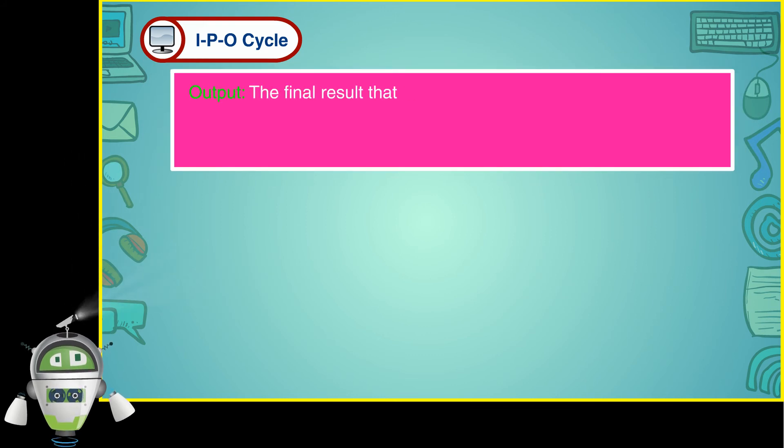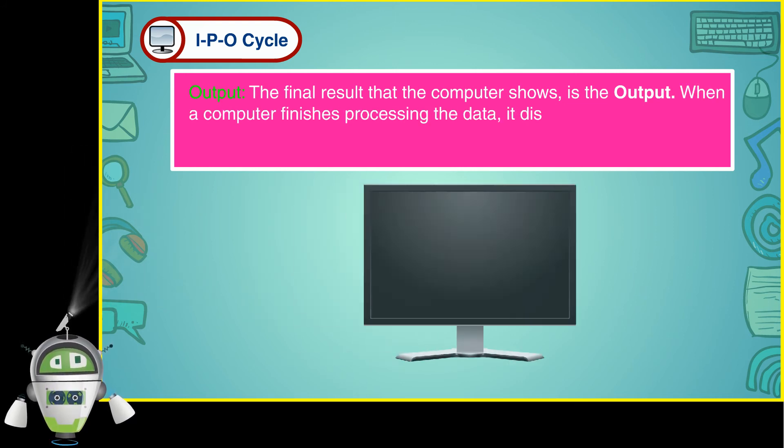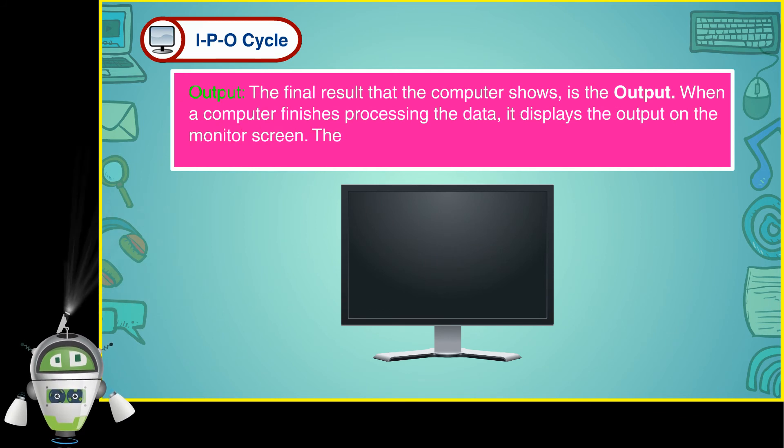Output. The final result that the computer shows is the output. When a computer finishes processing the data, it displays the output on the monitor screen.